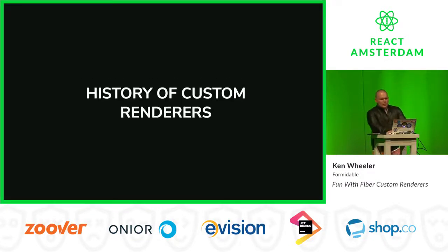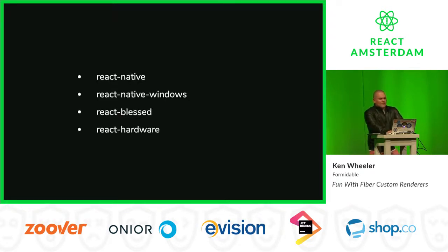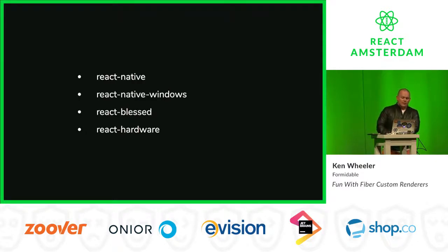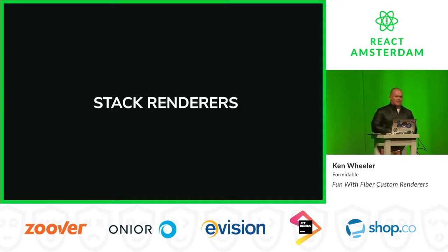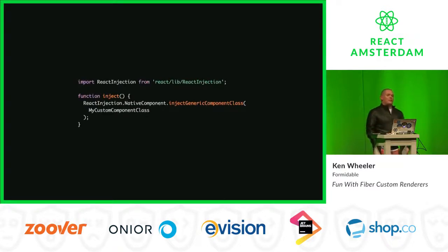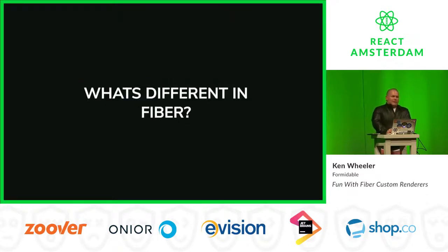Up until we had the custom renderer stuff, there were a couple of notable custom renderers: React Native mostly, then React Native Windows, React Blessed — which lets you render to the terminal — and React Hardware by Dustin Castin, which lets you use JSX to describe and operate hardware like Arduinos. Those are all examples of stack renderers. Historically, to write one you had to use React injection to override certain parts of React and React DOM.